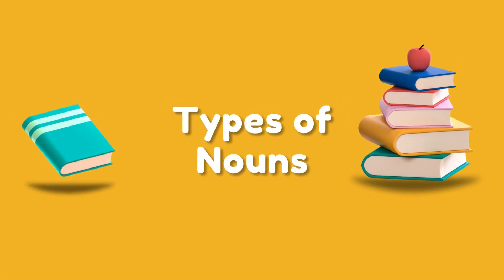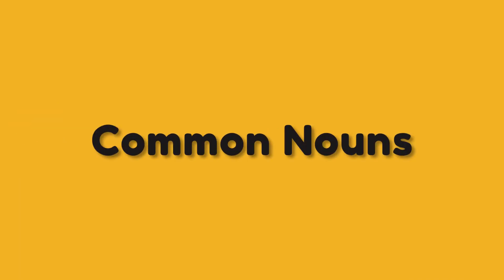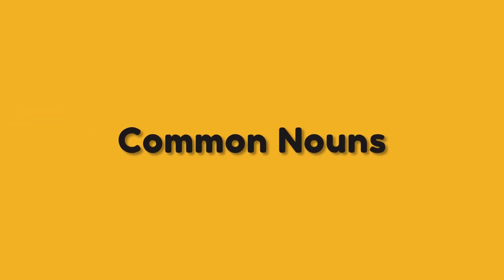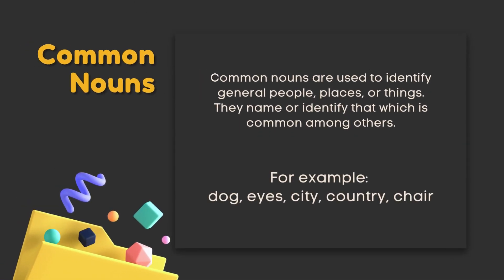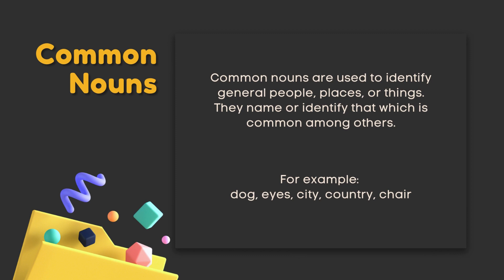Let's now go on to different types of nouns. Common nouns are used to identify general people, places, or things. They name or identify that which is common among others. For example: dog, eyes, city, country, chair.